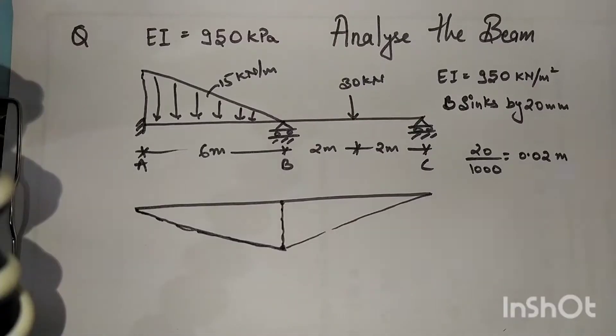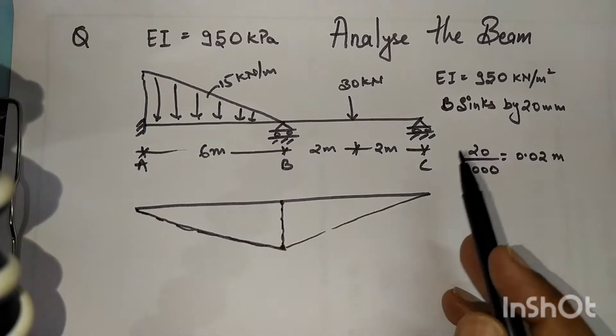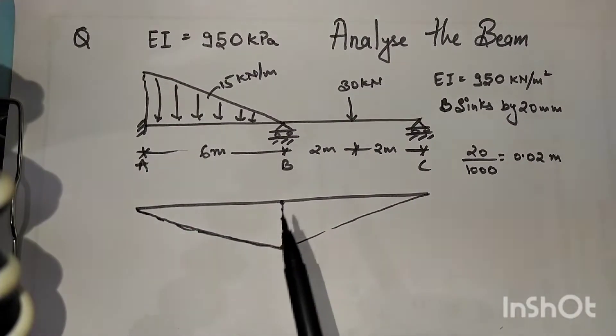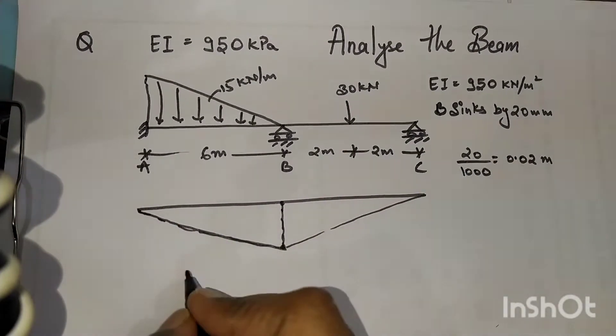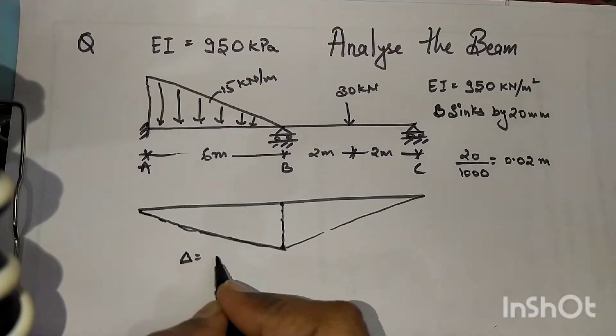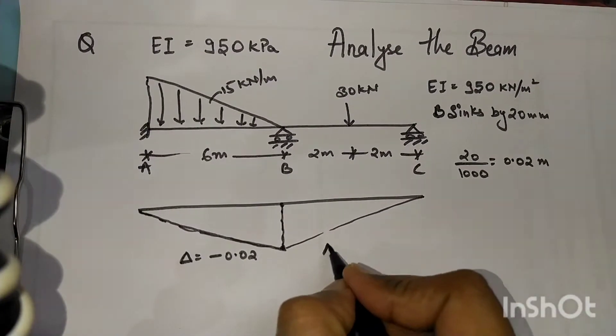20 mm divided by 1000 will give you 0.02 meters. Whenever your right hand side support is sinking, we always consider delta to be as negative 0.02. When left hand side support is sinking, that is positive 0.02.